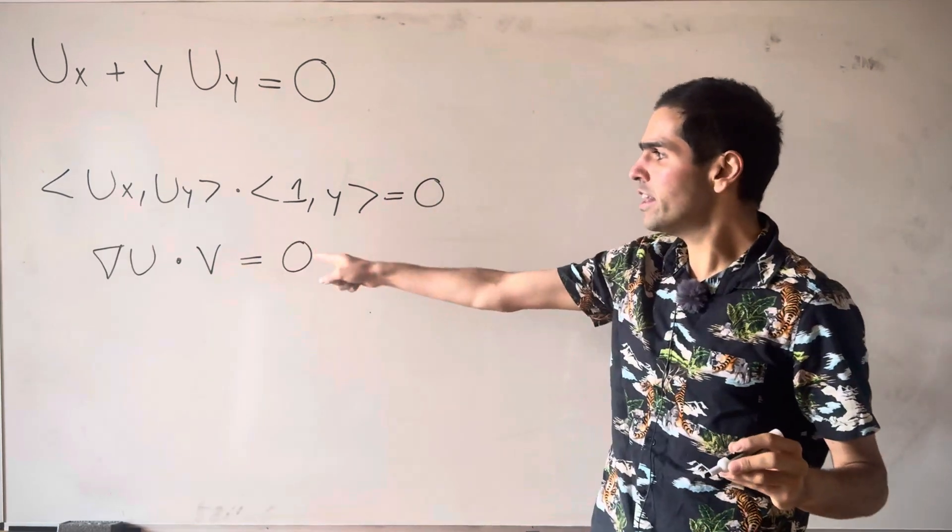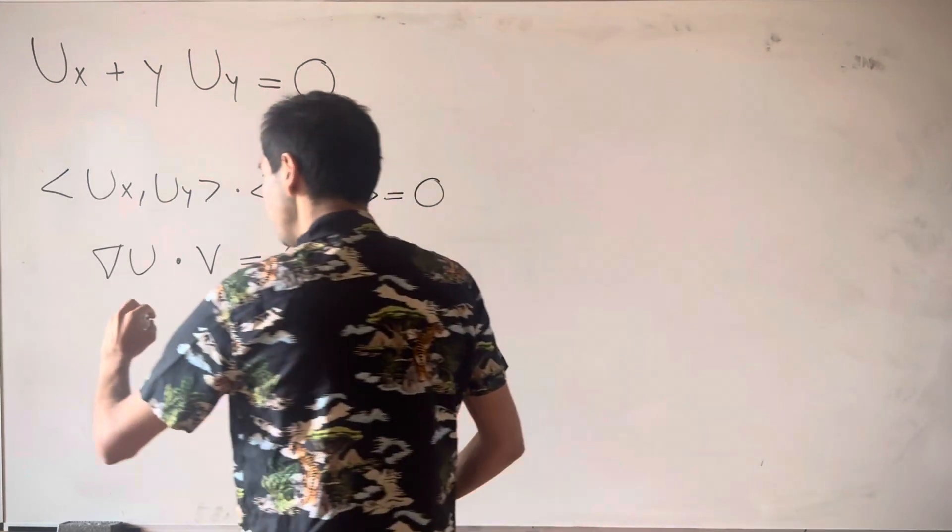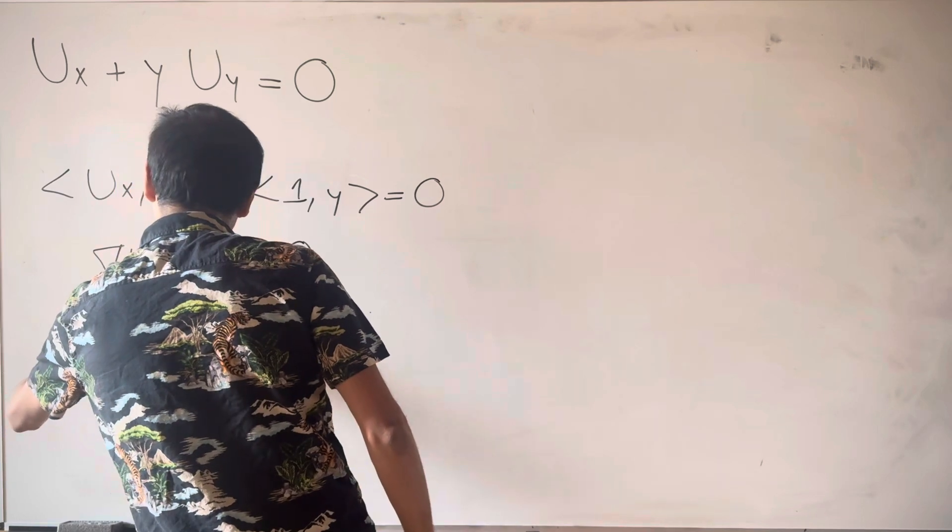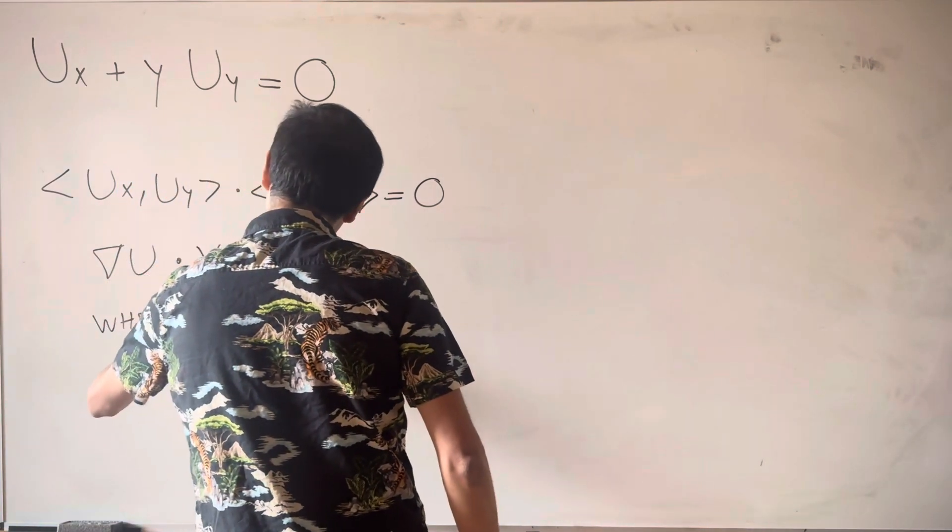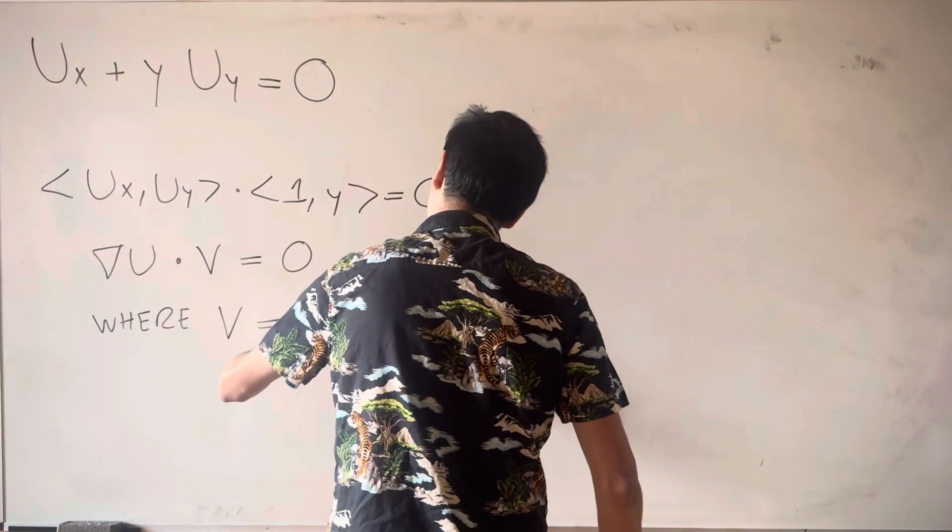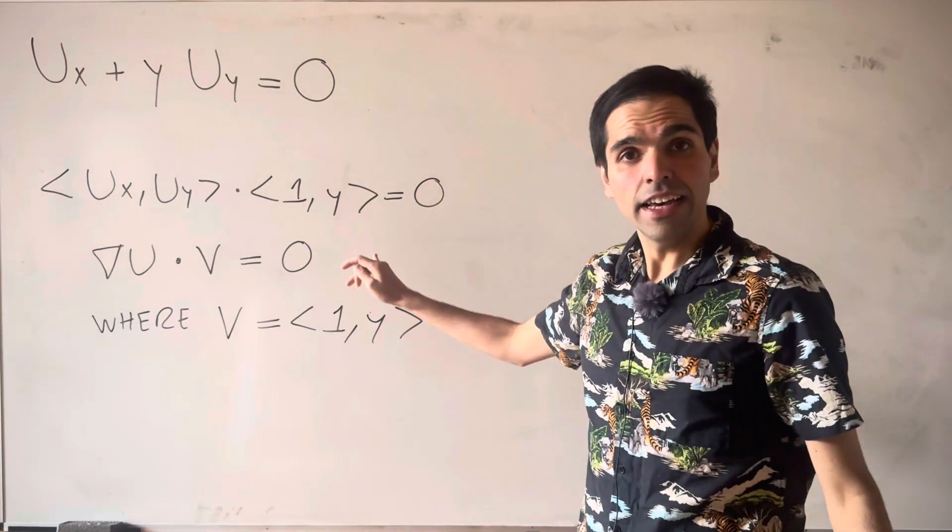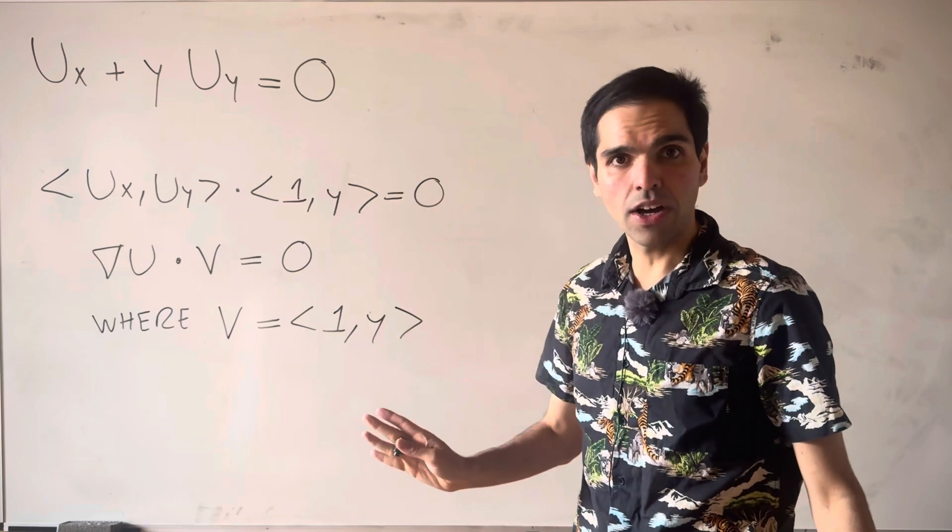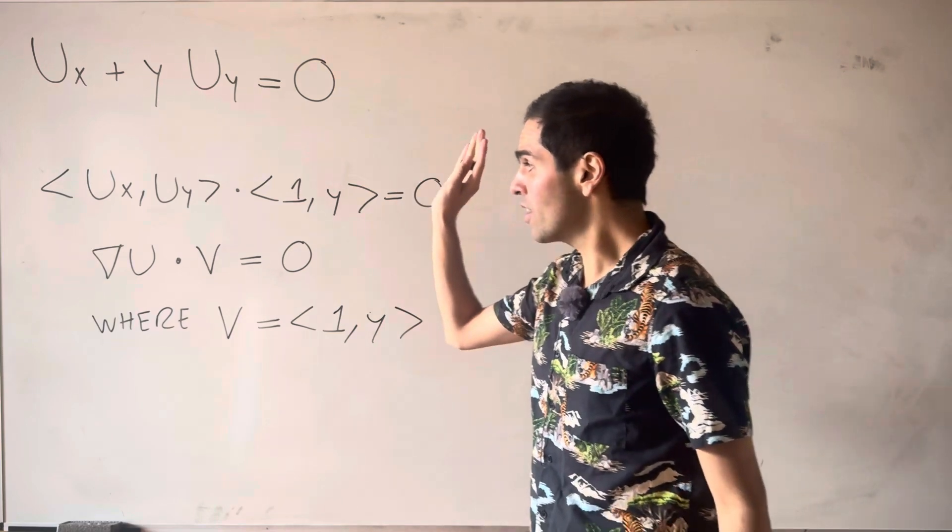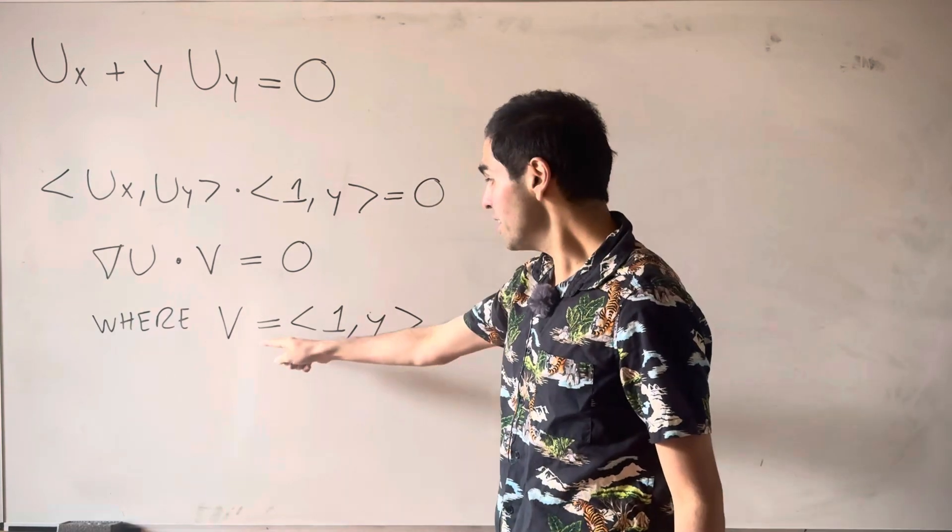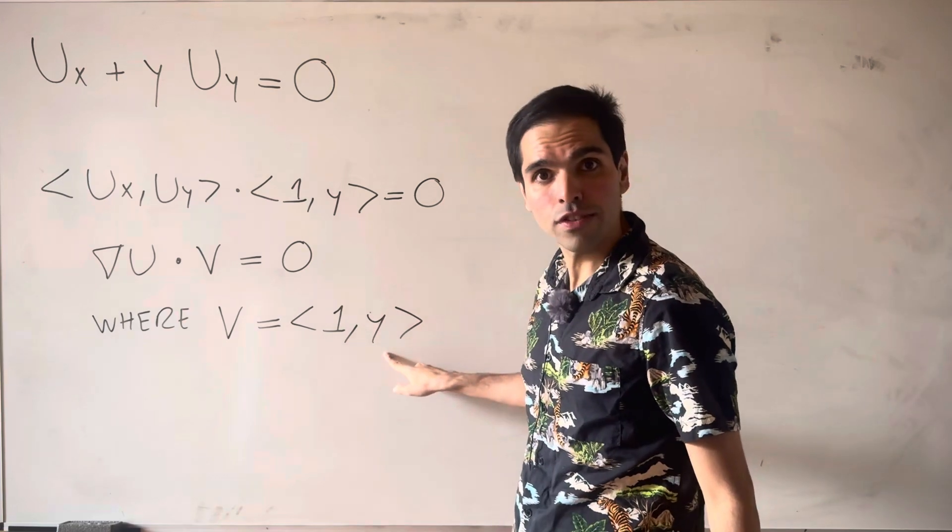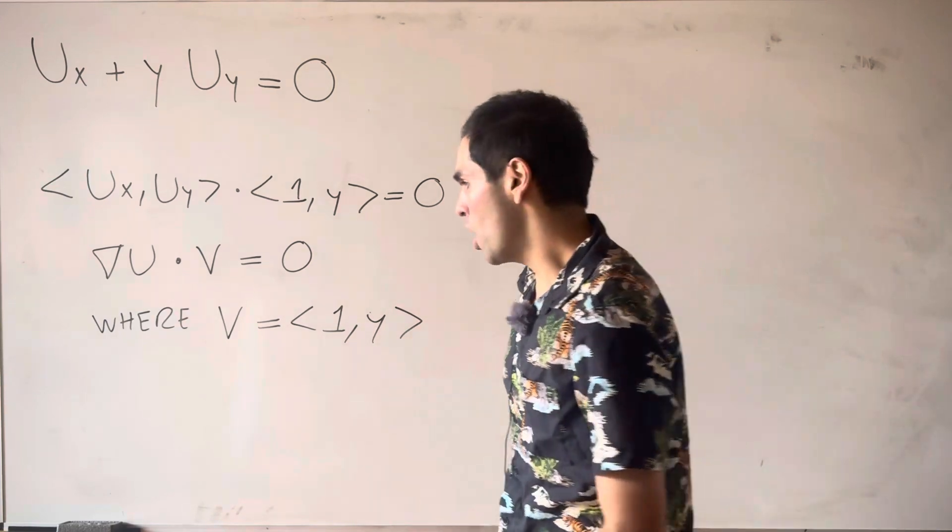In other words, gradient of u dotted with v equals 0, where v is 1 comma y. So in this case, it is still true that u is constant, but not on lines, but in this case, curves directed by 1 comma y.